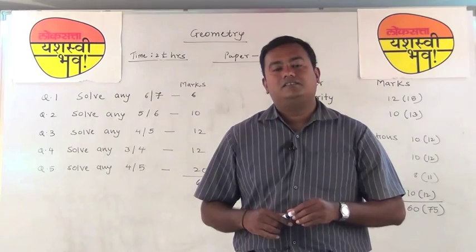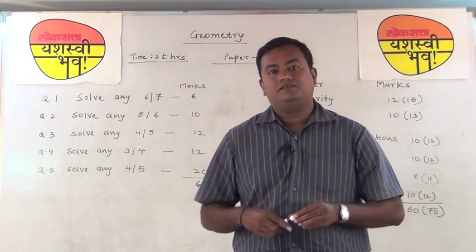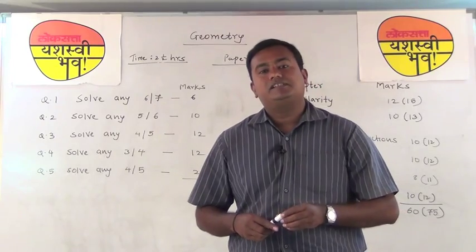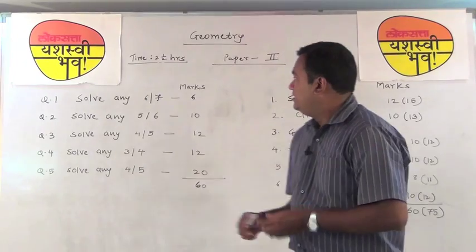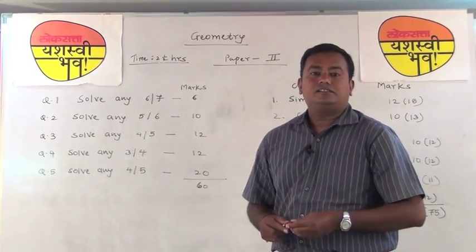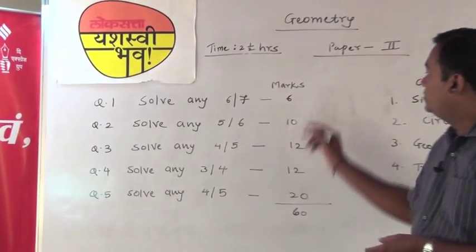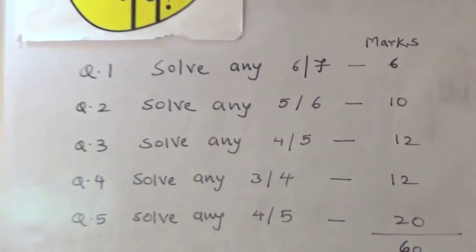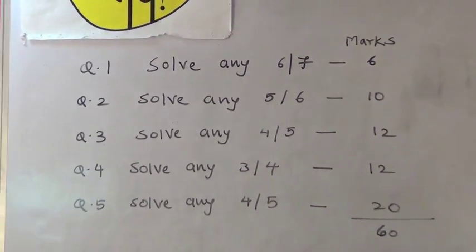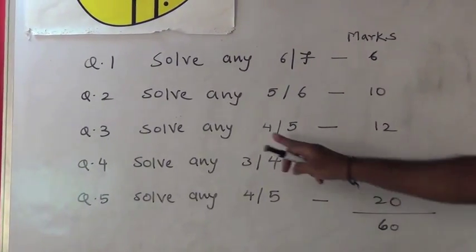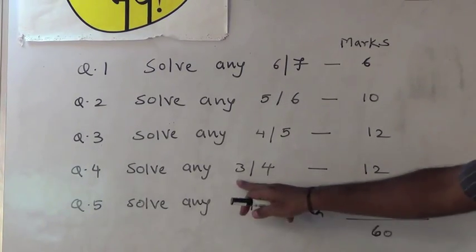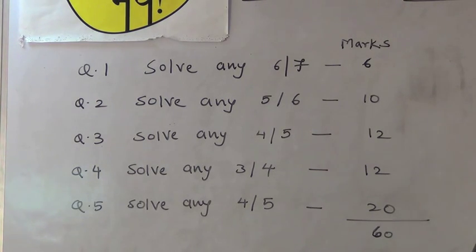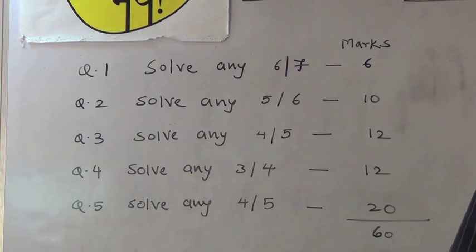In the Prelim examinations, we follow the pattern which is given as per the board. As far as geometry is concerned, the paper pattern is as follows: Question 1 is solve any 6 out of 7, total marks 6. Question 2 is solve any 5 out of 6, marks 10. Question 3 is solve any 4 out of 5, marks 12. Question 4 is solve any 3 out of 4, marks 12. Question 5 is solve any 4 out of 5, marks 20.